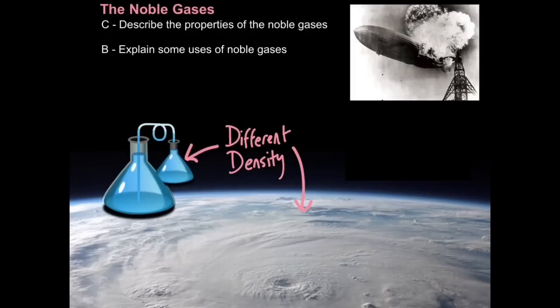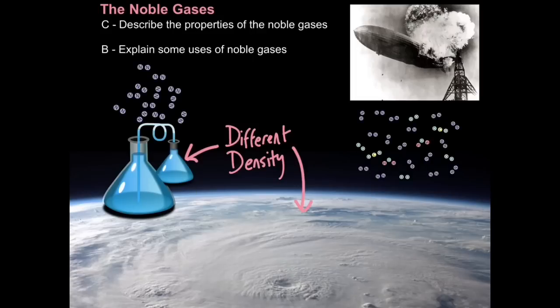The noble gases were discovered when scientists realized that nitrogen produced by chemical reactions in a lab had a different density to the atmospheric nitrogen. They asked what on earth could cause this difference in density, should be the same stuff. Their conclusion was hidden within the atmospheric nitrogen there must be other gases.